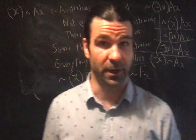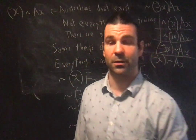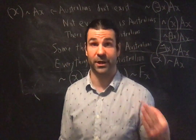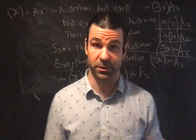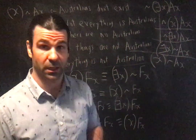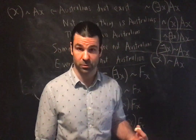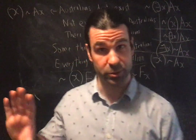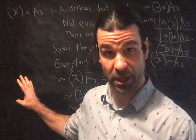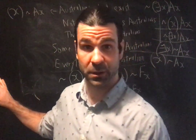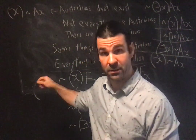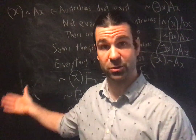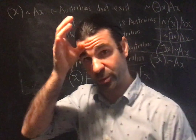Unit 11, Part 5. Quantifier negation equivalences and the QN rules. These are rules which you'll be able to cite in a proof. You'll be able to write QN as you transform some formulas into other formulas that are equivalent.